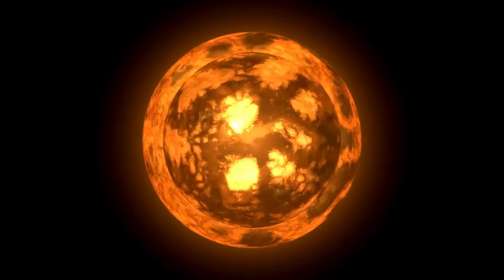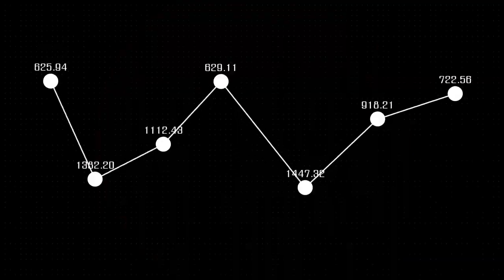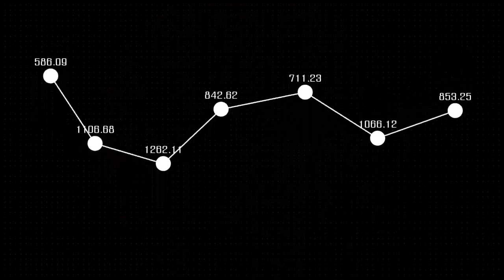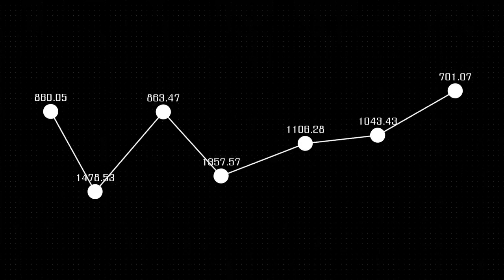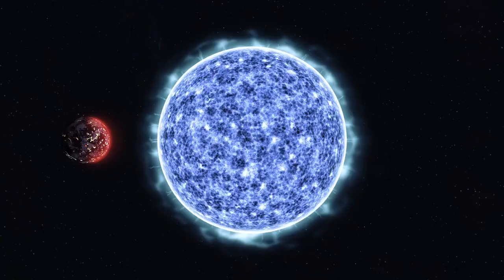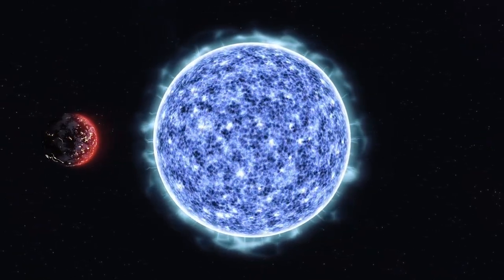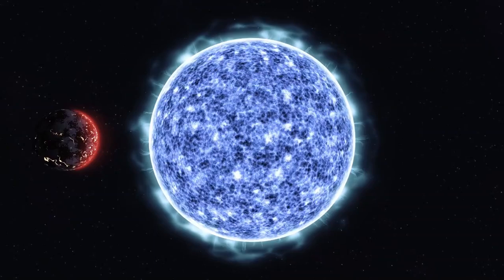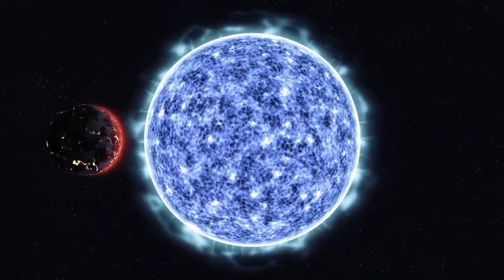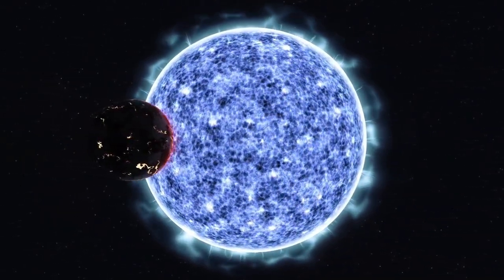However, brightness is not the only outstanding feature of the star. Betelgeuse is known for its distinctive reddish color, which is due to its cool surface, which has a temperature of about 3,500 Kelvin.